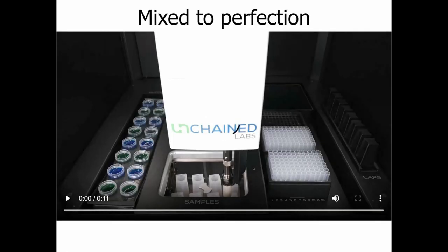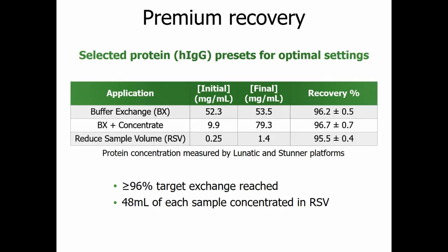Gentle mixing in the buffer exchange chamber occurs at 700 to 1,000 RPM, with 700 RPM recommended for most sample types. Putting all these features together, you get very nice recovery — whether you're running buffer exchange only, buffer exchange with concentration, or the reduced sample volume application.